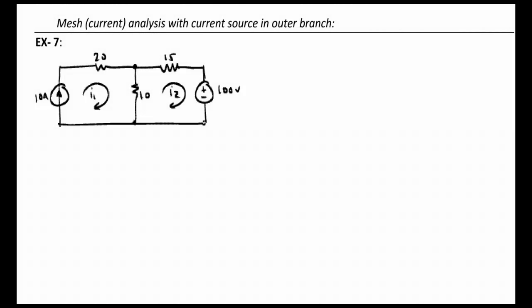We now continue with our mesh analysis. In the circuit we've been working with, we've replaced the dependent source with a resistor as it was originally, but now we have replaced the voltage source on the left side with a current source. So we have an independent current source in an outer branch.